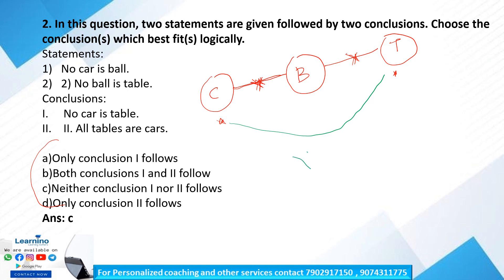Conclusion 1: no car is table — we don't know, as the relationship between C and T is undefined. It may or may not be true. Conclusion 2: all tables are car — we also don't know their relationship, so this is unknown too. Both conclusions are crossed as unknown. Neither conclusion 1 nor conclusion 2 follows, so option C is our correct answer.